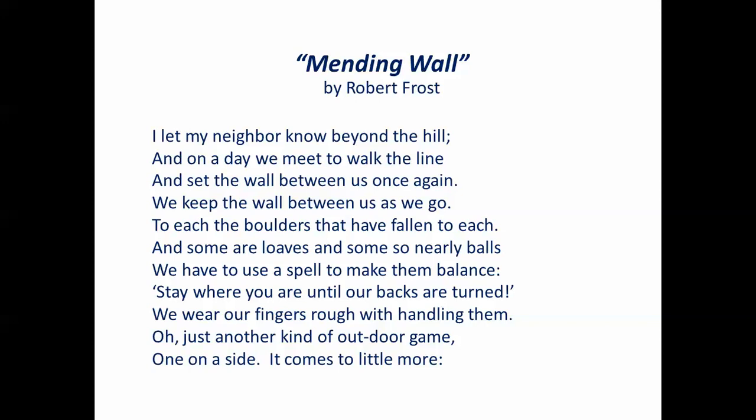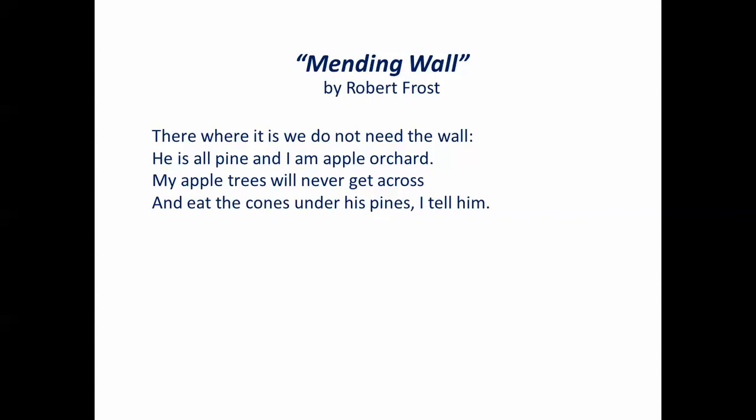Now we come to the point in the poem when the sauce begins to thicken. So far, this has been a straightforward poem about describing the wall and mending it. But at this point, the speaker begins to consider why we do this. "There where it is, we do not need the wall. He is all pine, and I am apple orchard. My apple trees will never get across and eat the cones under his pines, I tell him." So the speaker questions the need for the wall, and makes the very legitimate point that his apple trees aren't going to traipse across the field and bother his pine trees, and vice versa. But the neighbor, who seems to be a really simple guy, can't be convinced. He only says, "Good fences make good neighbors."